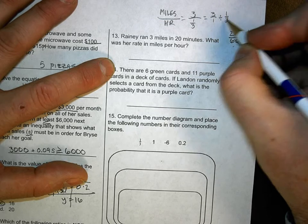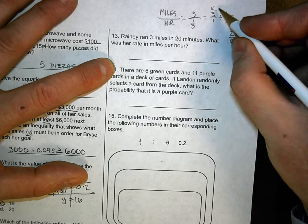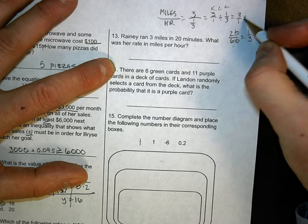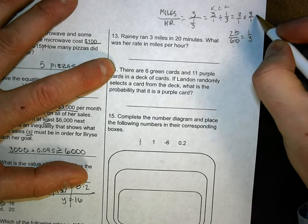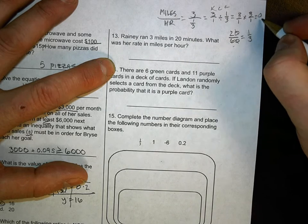I can leave the fraction alone because it's written exactly the same. 3 over 1 divided by 1 over 3. Since you can't divide by a fraction, you've got to flip them. Remember, keep change, change, keep change, change. 3 over 1 times 3 over 1. And that equals 9. So she was running at 9 miles per hour.